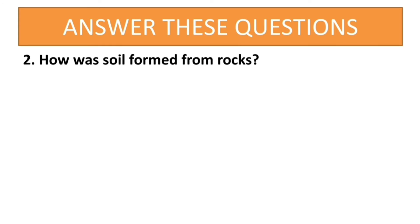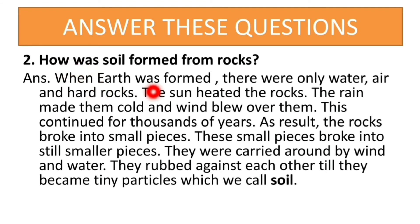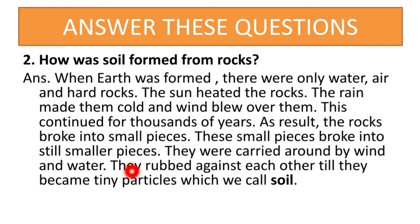How was soil formed from rocks? When Earth was formed, there were only water, air, and hard rocks. The sun heated the rocks, the rain made them cold, and wind blew over them. This continued for thousands of years. As a result, the rocks broke into small pieces, which broke into still smaller pieces. They were carried around by wind and water and rubbed against each other till they became tiny particles which we call soil.